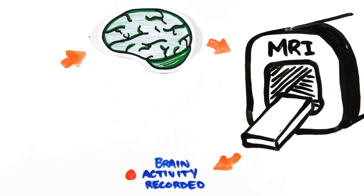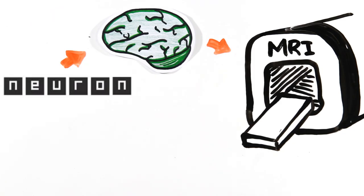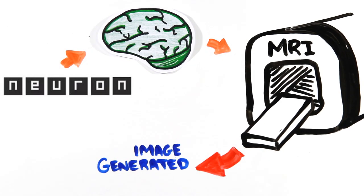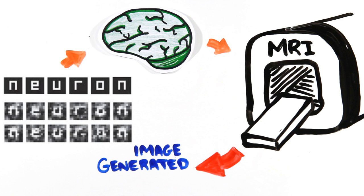After sufficient data, the subjects were shown completely different images, and the software would predict and recreate what it thought they were seeing. After being shown the word 'neuron', these were the images the software generated. But it doesn't stop there.